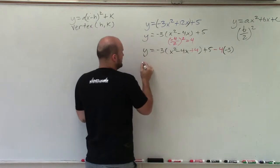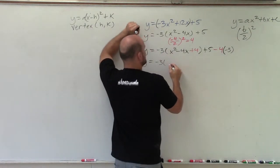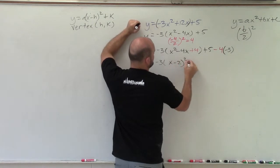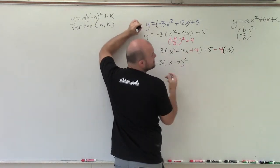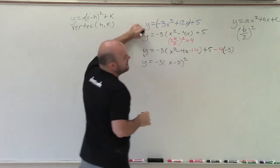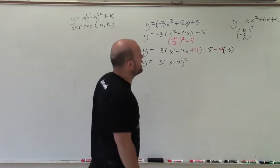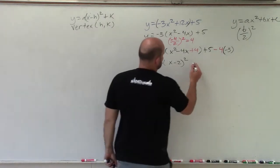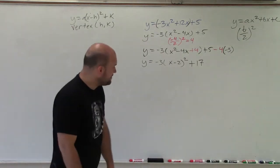But now, I can factor my binomial squared, y equals negative 3 times, in this case, I have x minus 2 squared. Just go ahead and factor x squared minus 4x plus 4. You'll get x minus 2 times x minus 2, which we rewrite as x minus 2 squared. Negative 4 times negative 3 is a positive 12, plus 5 is going to be 17. So that is going to be my equation.